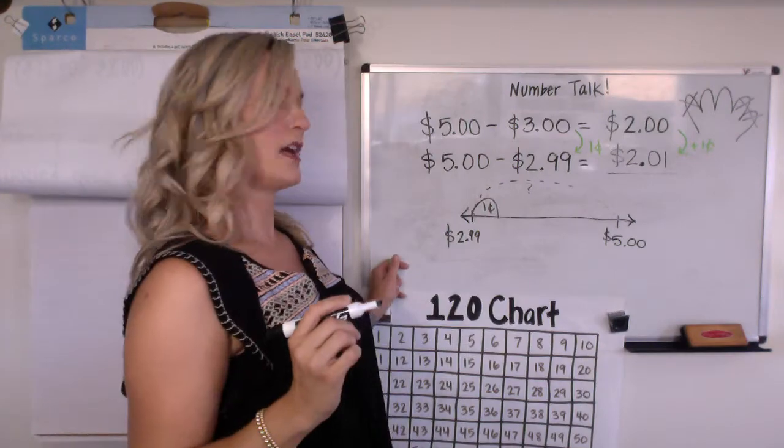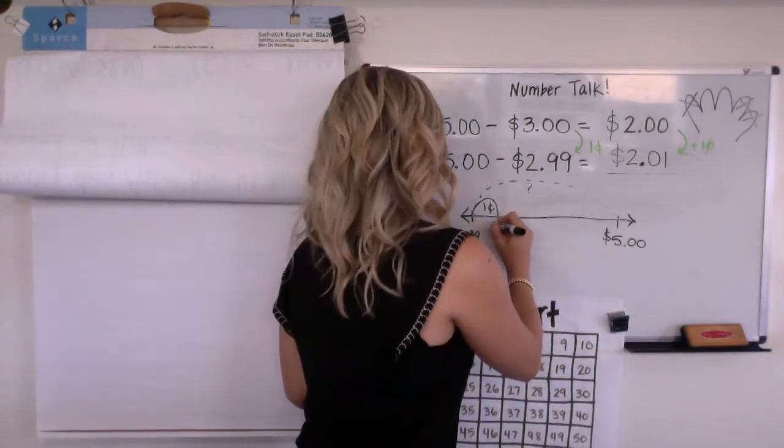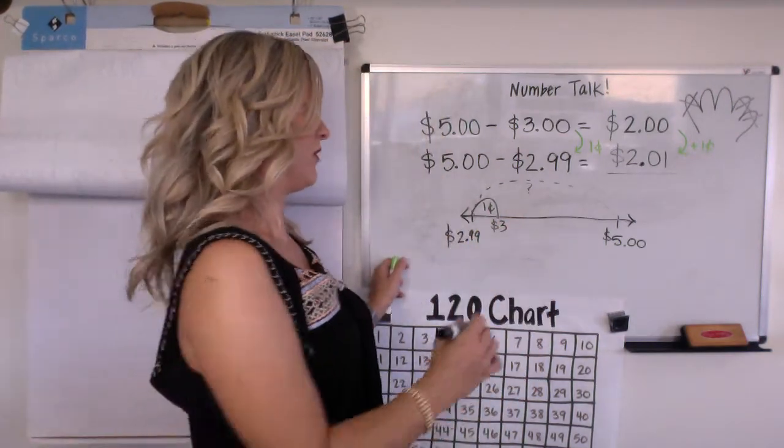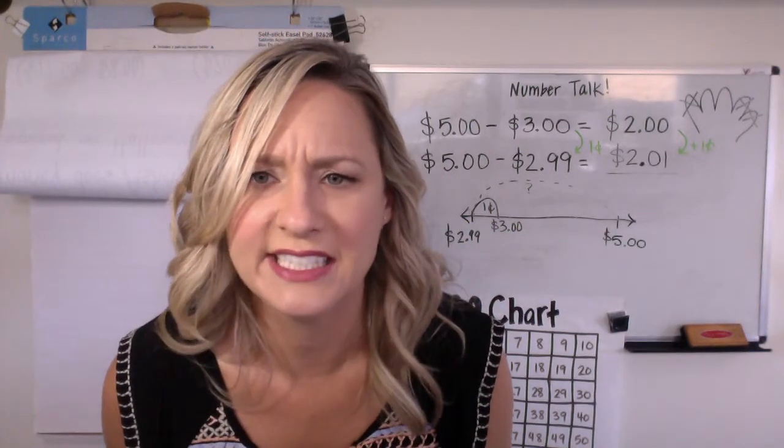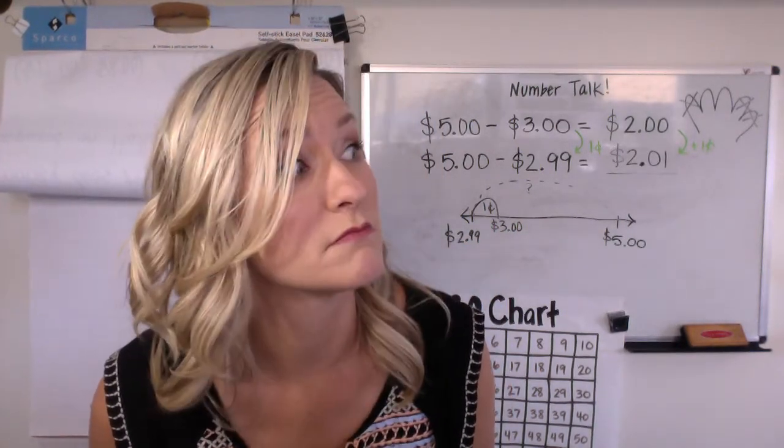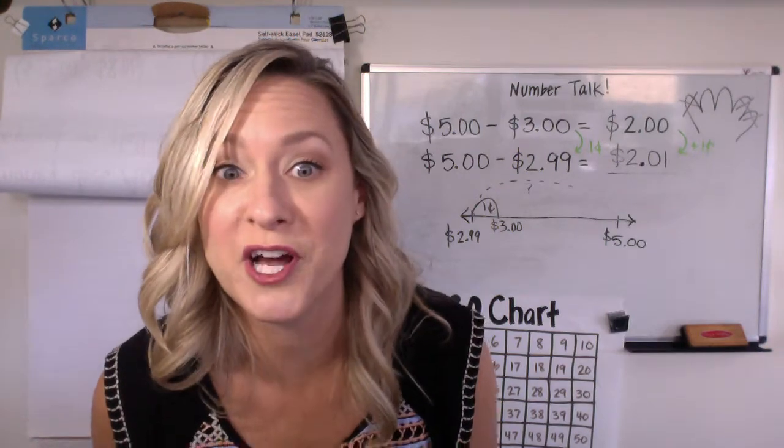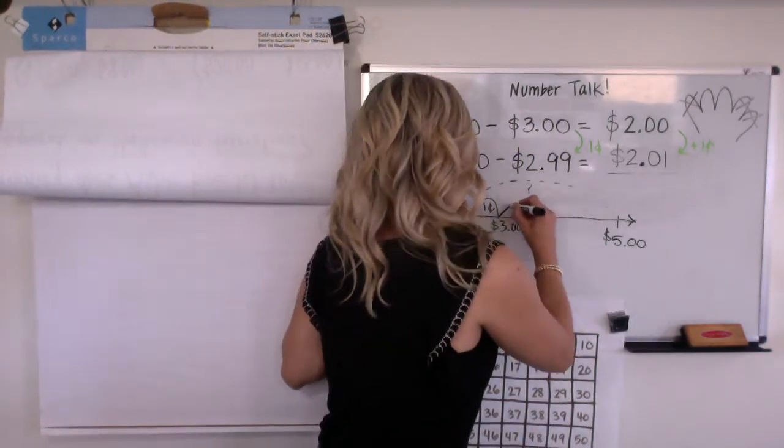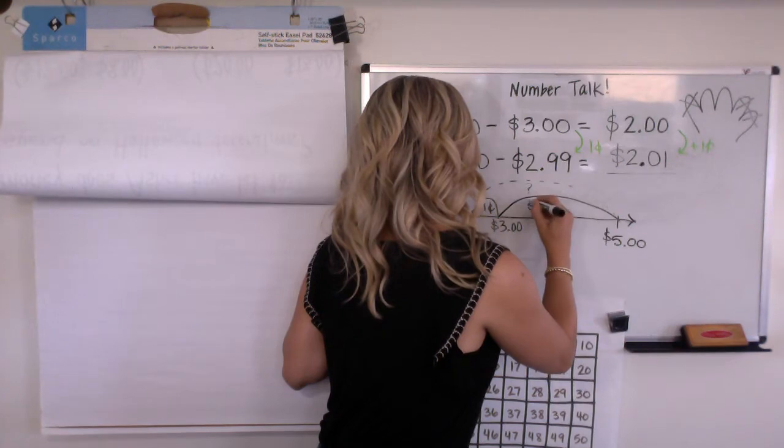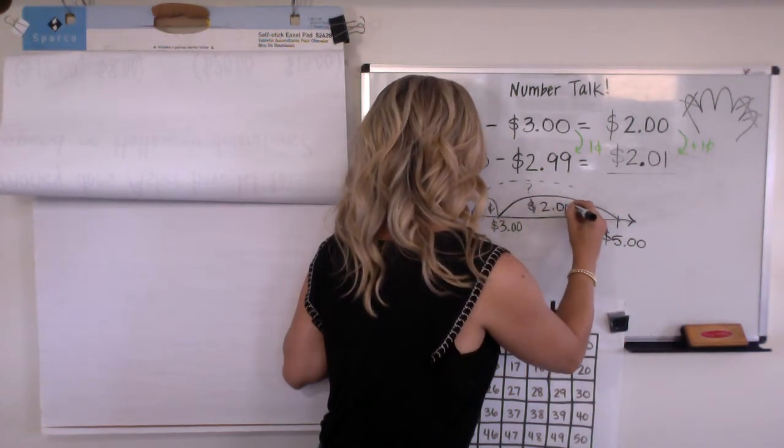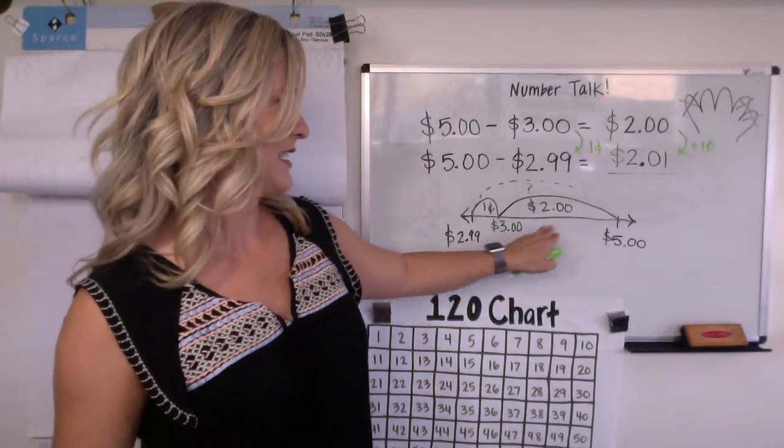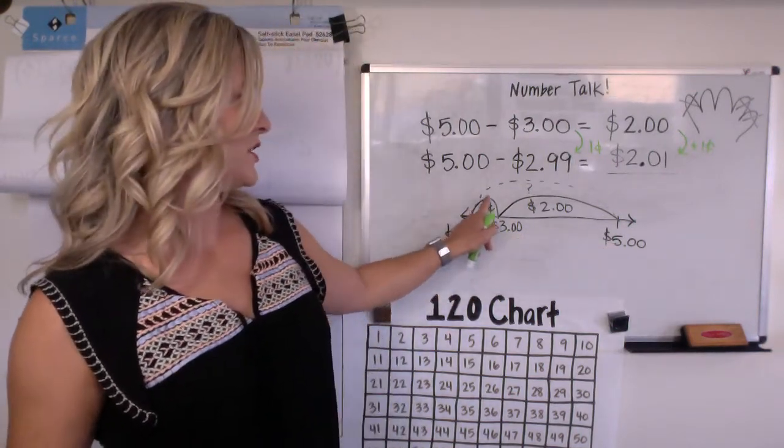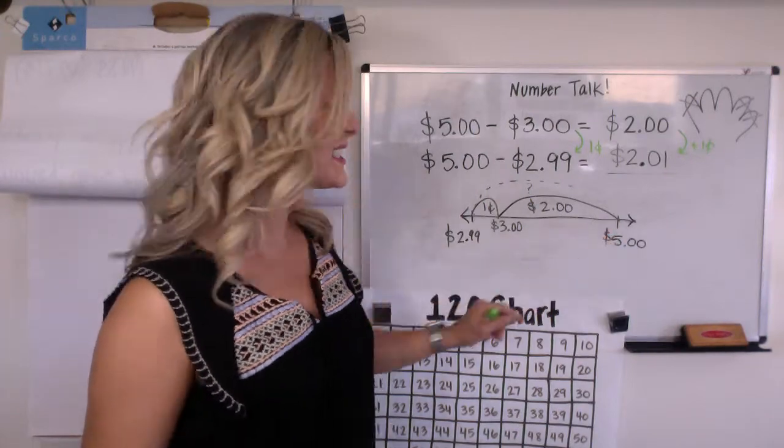One cent gets me to three dollars. Now I'm at three dollars. How much do I have to add to get to five dollars? Two dollars, you're right. So I only have to add two dollars. So the distance between two dollars and ninety-nine cents to five dollars was two dollars and one cent.